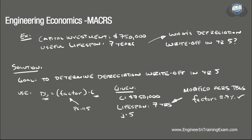It is important to note that these factors are given as percentages and must be converted to decimal when determining the depreciation. So plugging these values into the equation, we find that D sub 5 is equal to 0.089 times $750,000, which equals $66,750. So the depreciation write-off in year 5 is $66,750.